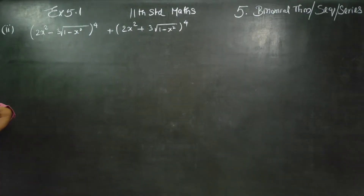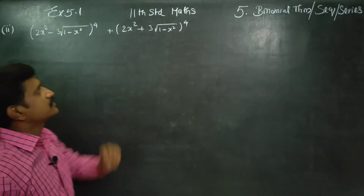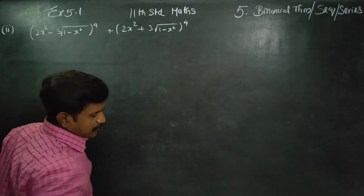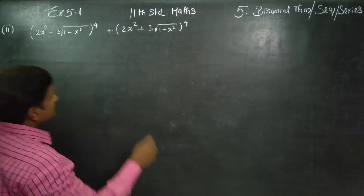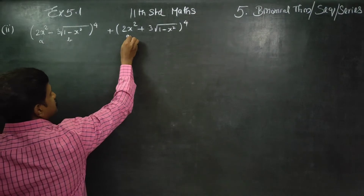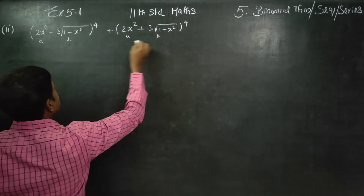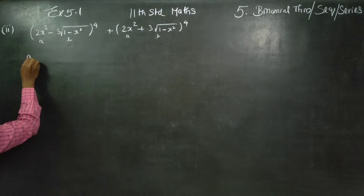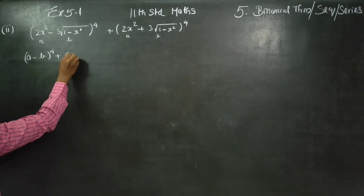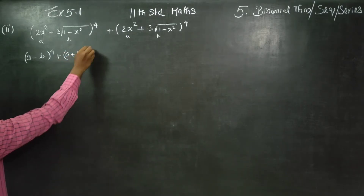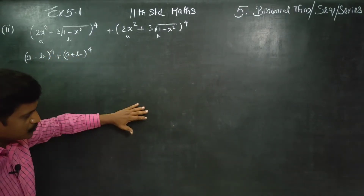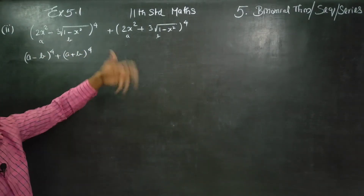Both expressions are raised to power 4, and the bases are positive integers. We need to simplify (a minus b) whole power 4, plus (a plus b) whole power 4. We will simplify the answer by substituting values of a and b.